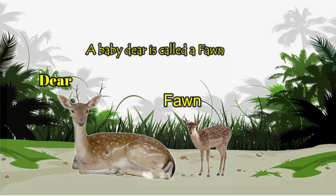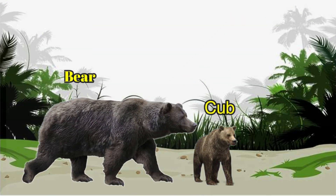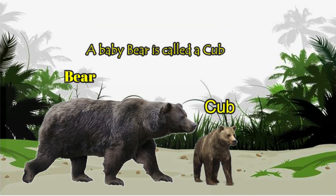Deer. Fawn. A baby deer is called a fawn. Bear. Cub. A baby bear is called a cub.